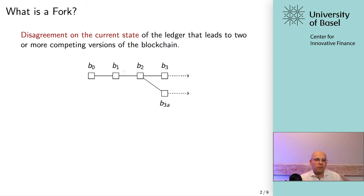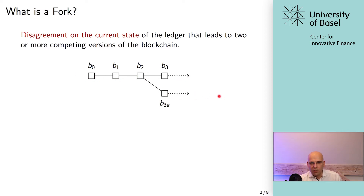You can think of two versions of Bitcoin competing. In terms of the blockchain, you have block zero, block one, block two, and then at block two there's a disagreement. Two successors are created for block two — block three and block three alternative (B3A). So you have one blockchain version and a second one, and with a persistent fork both would continue to grow.